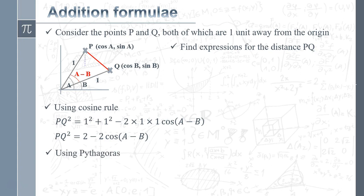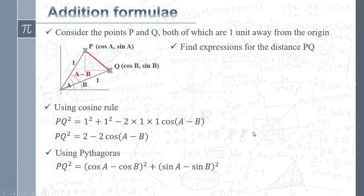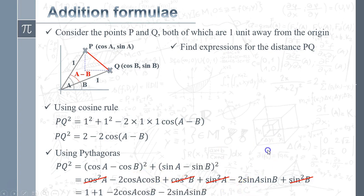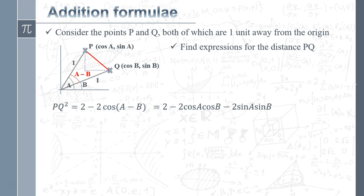Now I'll find an expression for PQ² using Pythagoras. The horizontal distance between P and Q is (cos A − cos B) and the vertical distance is (sin A − sin B). So PQ² = (cos A − cos B)² + (sin A − sin B)². Expanding those brackets gives a long expression, but we can tidy it up because cos²A + sin²A = 1 and cos²B + sin²B = 1, so those terms simplify.